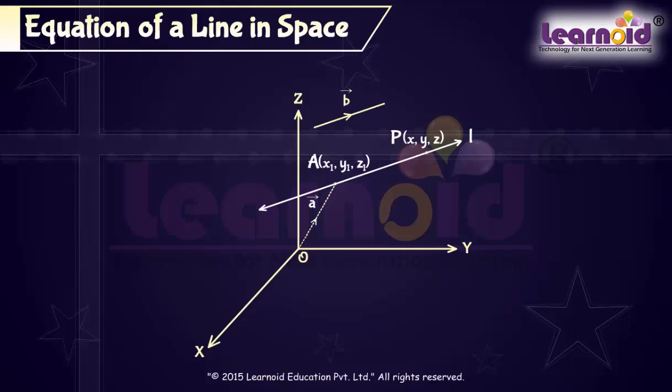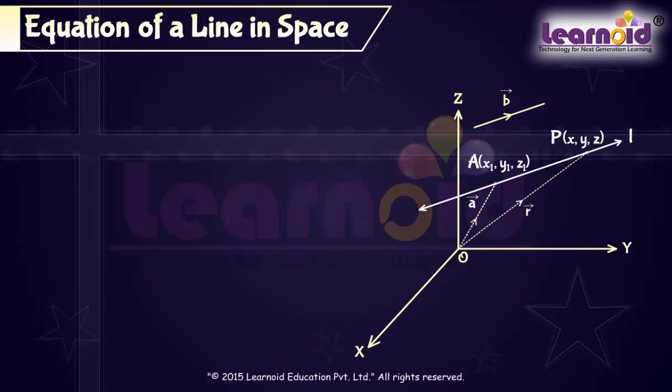Consider point P on the line, whose coordinates are (x, y, z). Then vector R is equal to xi cap plus yj cap plus zk cap. Vector A is equal to x1i plus y1j plus z1k.